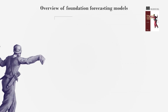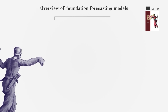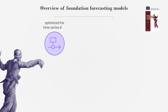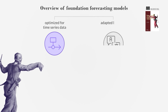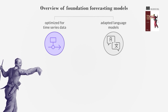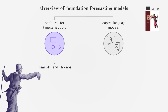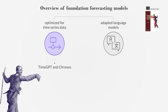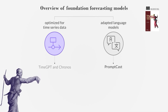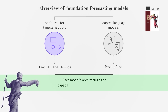Foundation models for time series forecasting fall into two categories: those specifically designed for time series data, and large language models adapted for time series tasks. Models like TimeGPT and Kronos are tailored for time series, while others like PromptCast repurpose language models for forecasting. Each model's architecture and capabilities will be explored in detail.